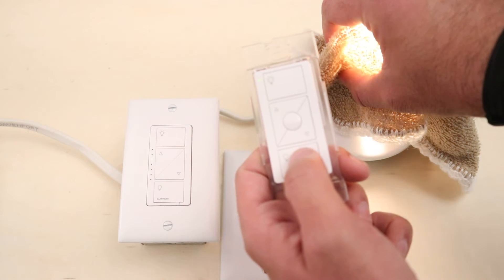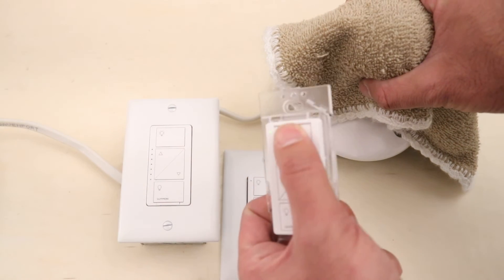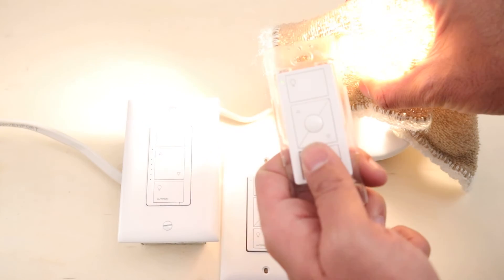There you go. You can see that the remote is controlling the light switch. We can turn it on and off over here.